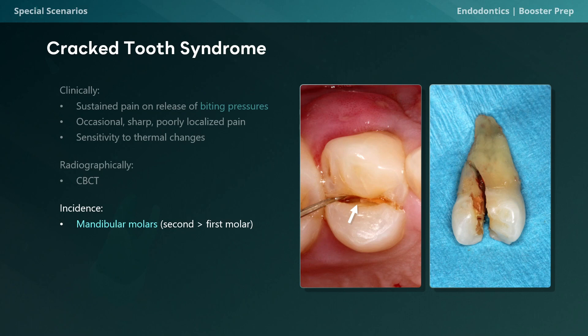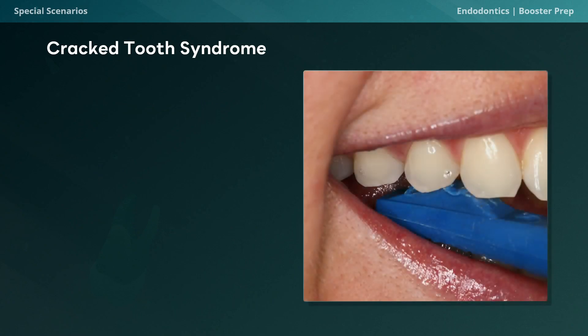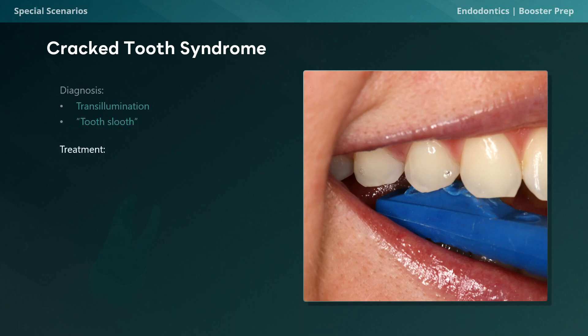Let's now talk about how we can diagnose Cracked Tooth Syndrome. There are really only two things that help us diagnose the problem. We have transillumination, like we discussed earlier, or the use of a tooth sleuth, as seen in this image. Both of these tools can be used to help diagnose a cracked tooth.